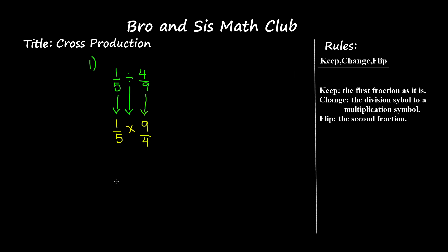Now we need to multiply one over five by nine over four. We're going to multiply one times nine over five times four. One times nine is nine, and five times four is twenty, so we get the answer to problem one: one over five divided by four over nine equals nine over twenty.